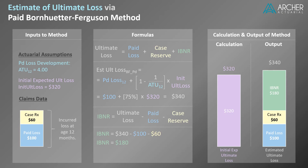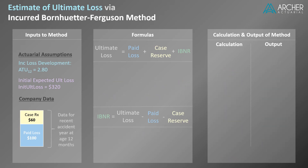We're now ready to move on to the incurred version of the BF method. The incurred version of the BF method is similar in form to the paid version, except that incurred loss is used in place of paid loss. Estimated ultimate loss using the incurred BF method equals incurred loss plus the quantity (1 minus 1 over the age-to-ultimate factor) times the initial expected ultimate loss.